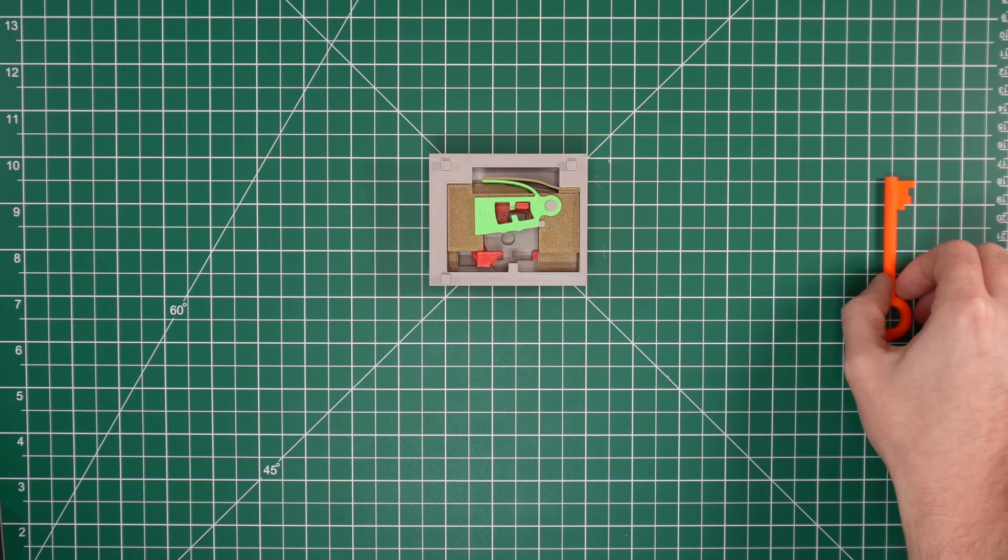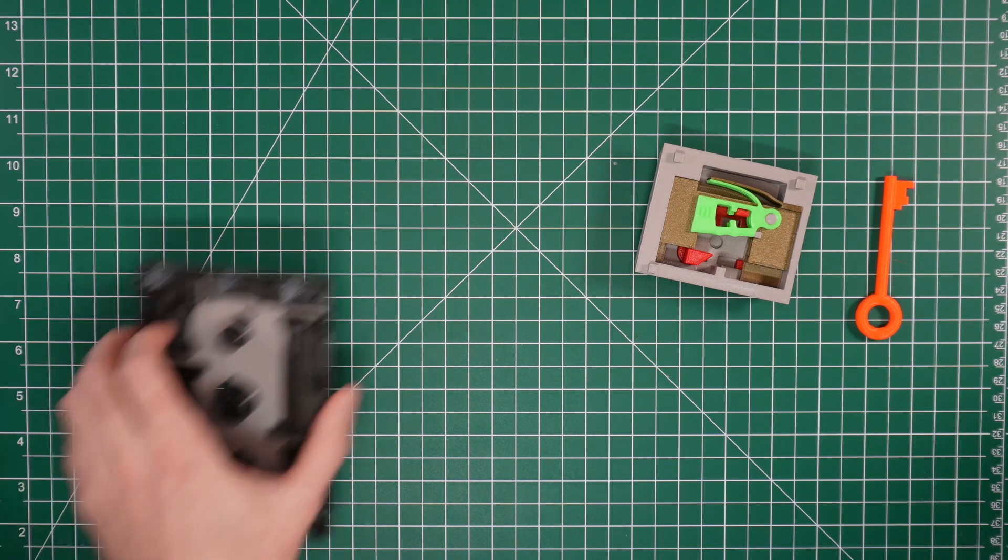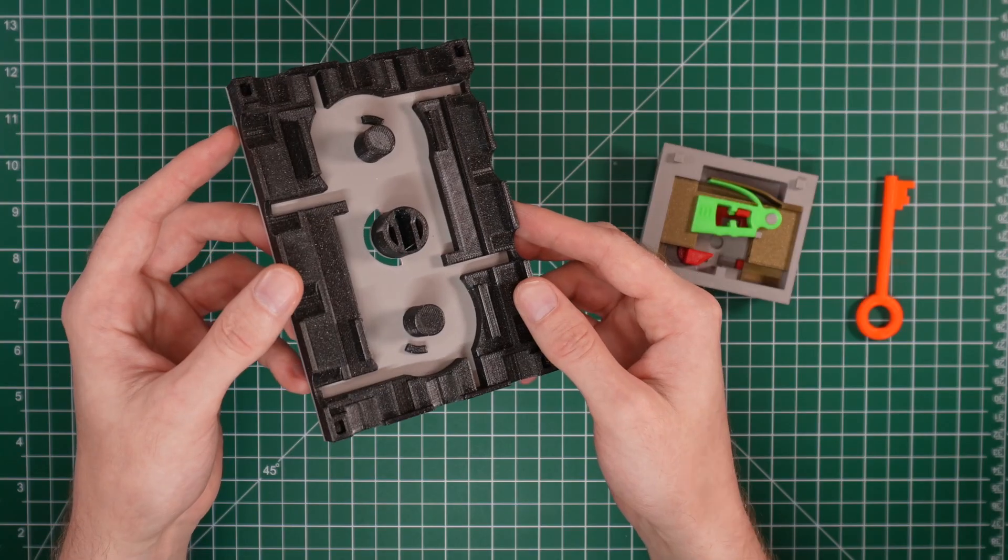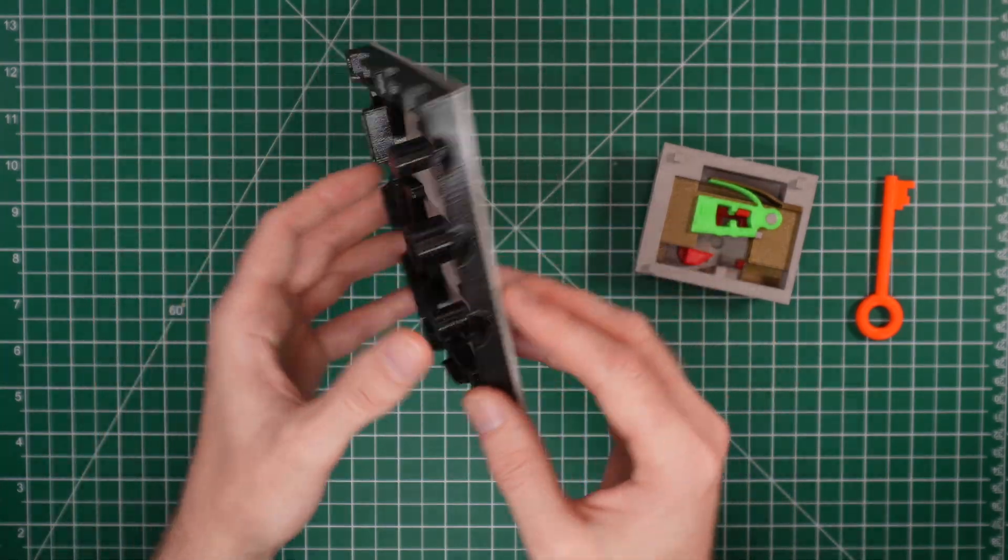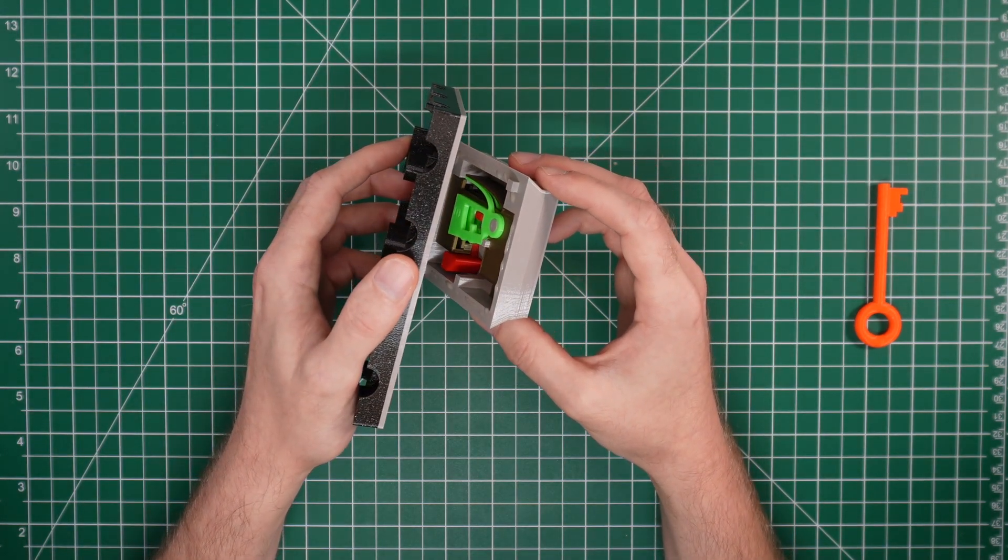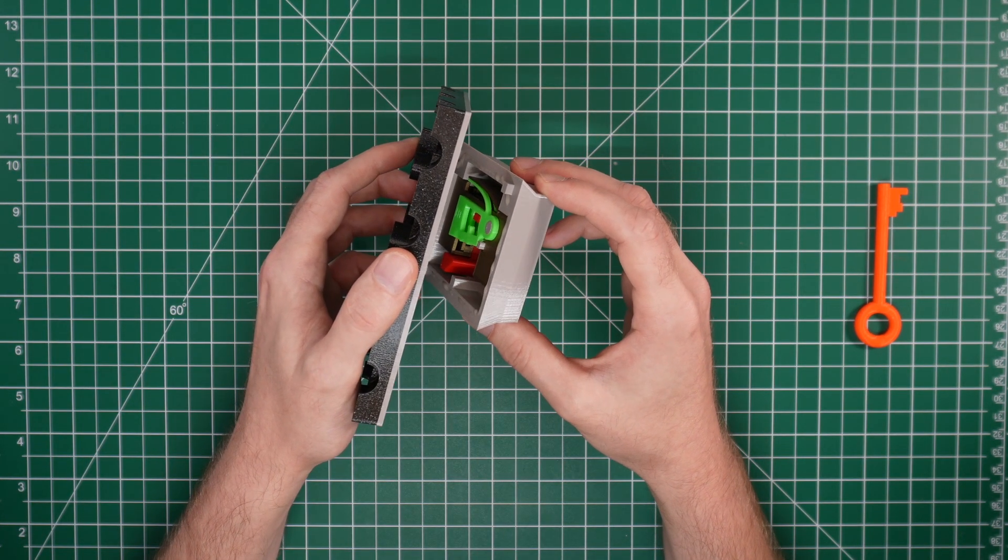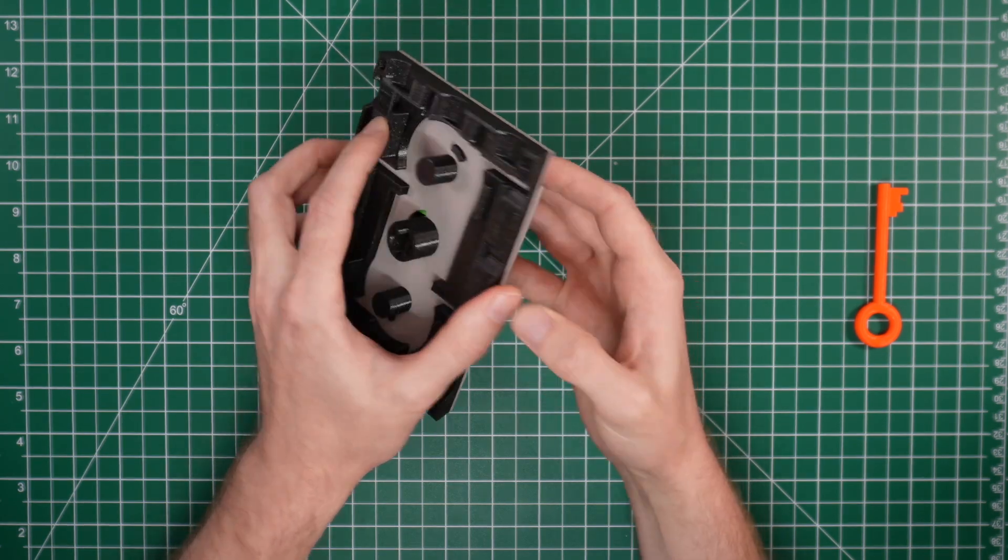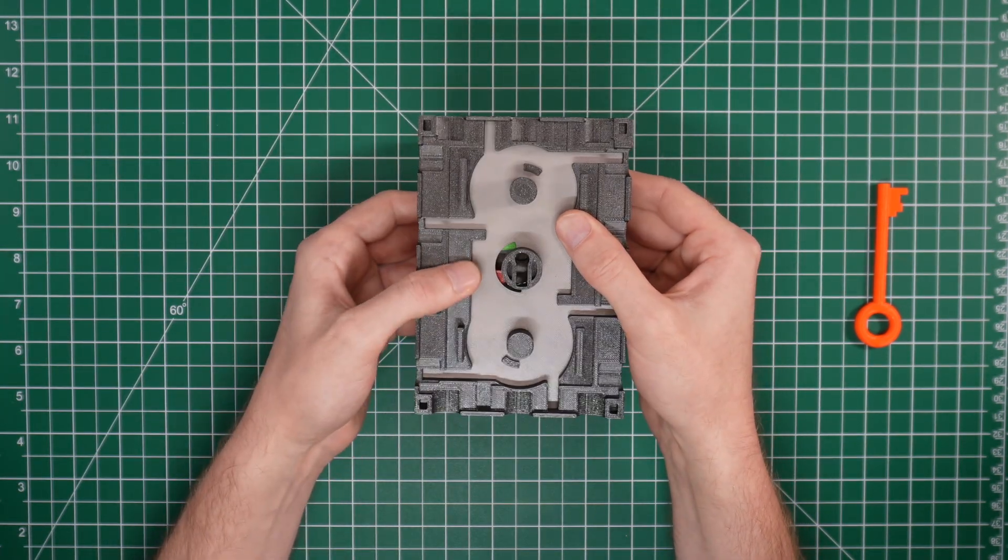After that, we need to glue the lock to the back of the door frame. I printed the door frame in two colors, but it's just a single layer color change, so no AMS is required. The lock body has three pegs on the top, which align with three indents on the back of the door. Just add some glue to the pegs and around the perimeter of the lock body and push the pieces together.